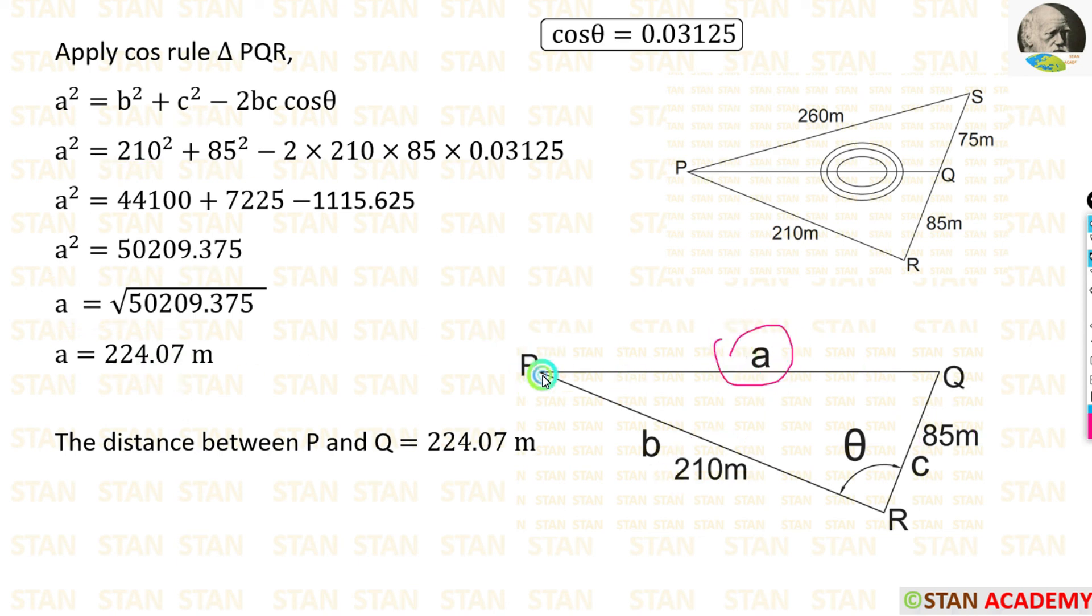We know that A is the distance of PQ. Finally we got the distance between P and Q. That is 224.07 meter. Now we are going to end this session. Thank you for watching this video.